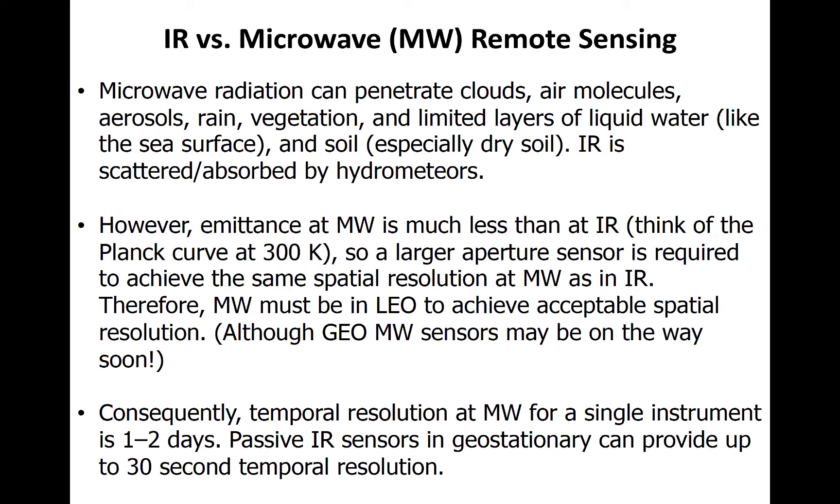However, emittance of microwave radiation by earth is much smaller than its infrared emissions. Therefore, the spatial resolution of microwave data is generally less than that of IR data. This also requires that passive and active microwave instruments operate in low earth orbit.